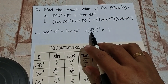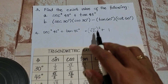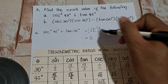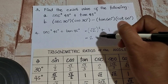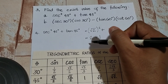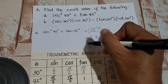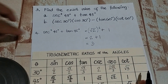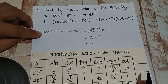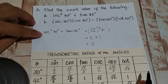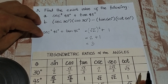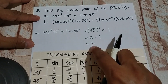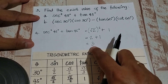So what is square root of 2 squared? That is equivalent to 2. Then plus 1. What is 2 plus 1? That is equal to 3. So the exact value of secant squared 45 degrees plus tangent 45 degrees is just equal to 3.